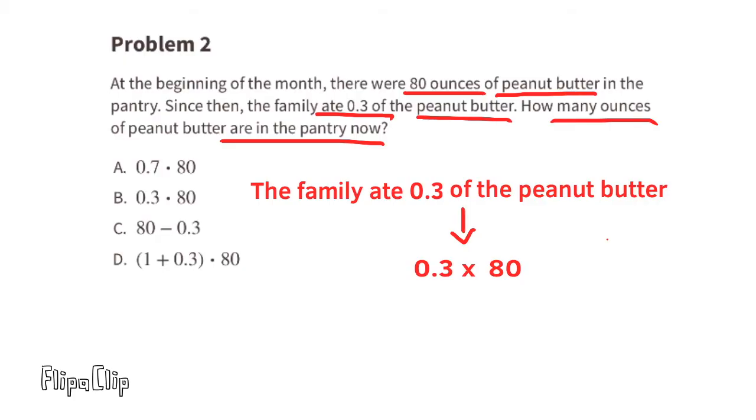If the family ate three-tenths of the peanut butter, that means that seven-tenths of the peanut butter is still in the pantry. I would select option A: seven-tenths times 80.